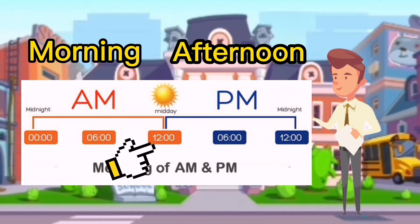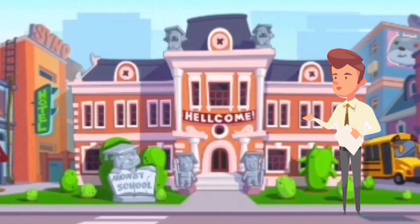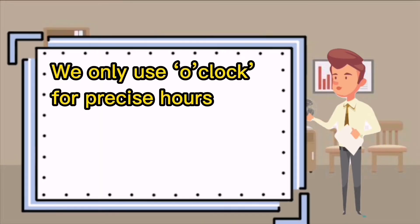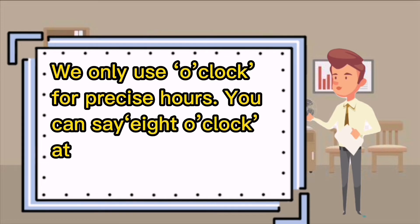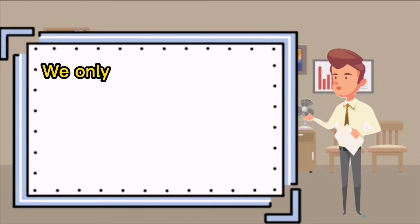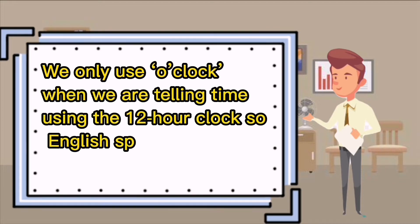We only use o'clock for precise hours. You can say it's 8 o'clock but not at 8:01. We only use o'clock when we are telling time using the 12-hour clock, so English speakers would never say 13 o'clock.